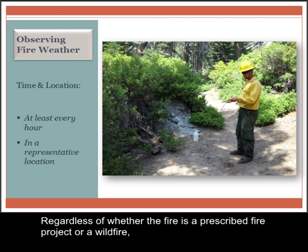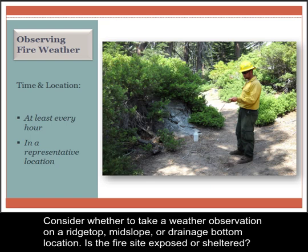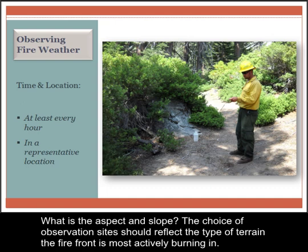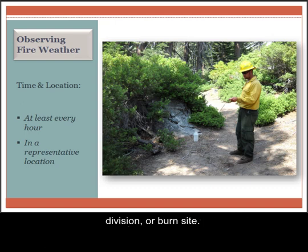Regardless of whether the fire is a prescribed fire project or a wildfire, the weather observer should strive to choose observation sites that most accurately reflect environmental conditions around the fire's location. Consider whether to take a weather observation on a ridge top, mid-slope, or drainage bottom location. Is the fire site exposed or sheltered? What is the aspect and slope? The choice of observation sites should reflect the type of terrain the fire front is most actively burning in. Selecting an unrepresentative site will result in weather observations that don't truly reflect the environmental conditions of that incident division or burn site.